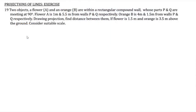Two objects, a flower notated by A and an orange notated by B, are within a rectangular compound wall whose parts P and Q are meeting at 90 degrees. Flower A is 1 meter and 5.5 meters from the walls P and Q respectively. Orange B is 4 meters and 1.5 meters from the walls P and Q respectively. Drawing projections, find the distance between them.